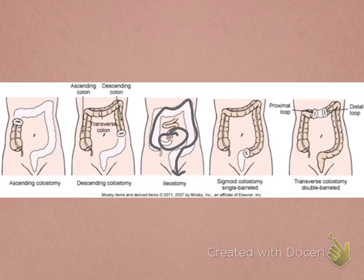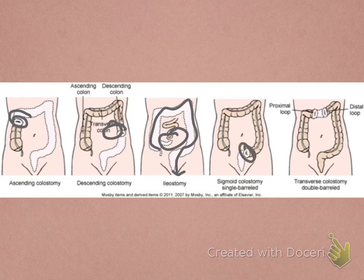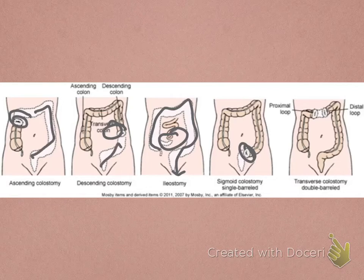Colostomies can happen in different parts of the colon — the ascending colon, transverse colon, or more distal colon. Depending on where they occur, that will determine how normal bowel movements are and how many nutrients are absorbed from food. Wherever the ostomy is developed, the rest of the colon distal to it would be removed.